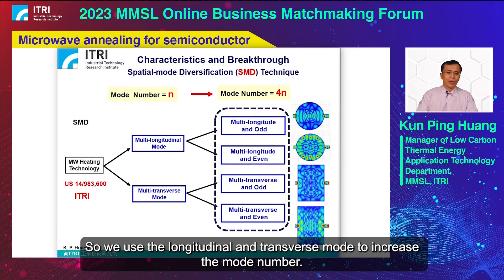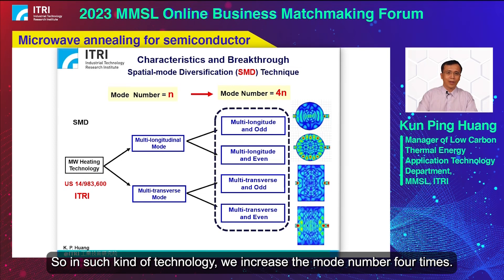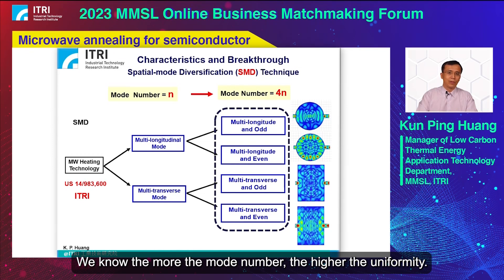We use longitudinal and transverse modes to increase the mode number. We also use even and odd modes to further increase the mode number. With this technology, we increase the mode number by four times. We know that a higher mode number leads to higher uniformity.